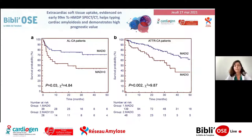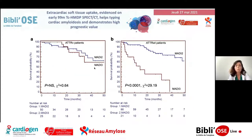Ce score a également un intérêt pronostique. Dans la population d'amylose AL, dès qu'on avait un score supérieur à 0, on observe une différence significative sur la survie, suggérant une atteinte systémique plus sévère. Dans l'amylose à transthyrétine également, un score MADI plus élevé entraîne une différence significative sur la survie. Étonnamment, dans l'amylose à transthyrétine mutée, les scores MADI 2 ou 3 ne donnent pas de différence sur la survie. Dans l'amylose à transthyrétine sauvage, on a bien cette différence, avec un pronostic plus péjoratif s'il y a une fixation extracardiaque en plus de la fixation cardiaque.